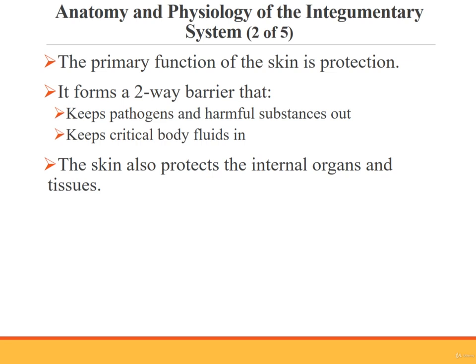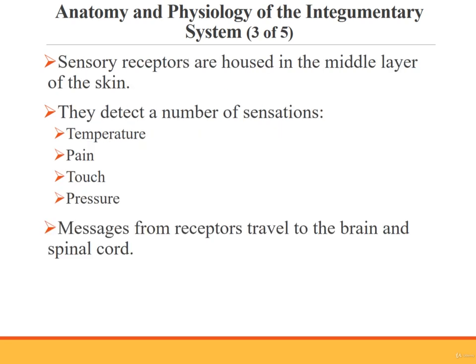The skin also houses sensory receptors, sometimes called nerve receptors. The sensory receptors are located in the middle layer of skin and they can detect temperature, pain, touch, and pressure. Messages relating to these sensations are passed from nerve endings within the skin to the brain and spinal cord.